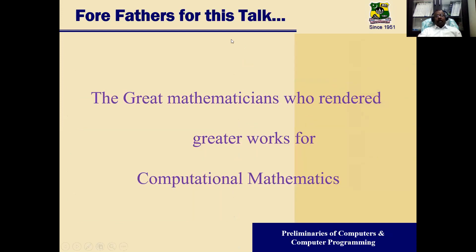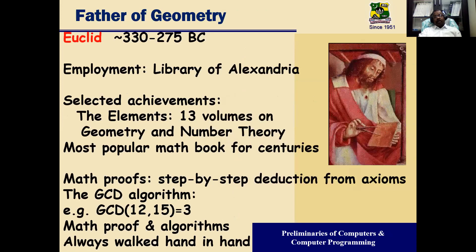Before we get into the talk, let's have a glance at our forefathers — the great mathematicians who rendered great work for computational mathematics. First comes Euclid, the father of geometry, who lived around 330 to 275 BC and was employed in the library of Alexandria. He made many contributions and his writings were published as books used by mathematicians for centuries. The popular Euclidean algorithm is one of his commendable works. His mathematical proofs and algorithms are all part and parcel of computer science.